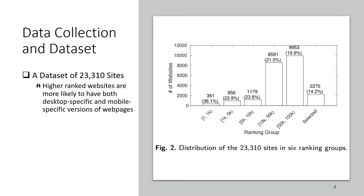The figure here shows the distribution of these websites across six ranking groups. We found that higher-ranked websites are more likely to have both mobile version and desktop version web pages. For example, among the top 1k websites, over 36% have both mobile and desktop versions — meaning when you visit those websites, they return different web pages to your mobile browser and your desktop browser. Now that we have the dataset ready, let's compare the tracking practices on mobile and desktop websites.